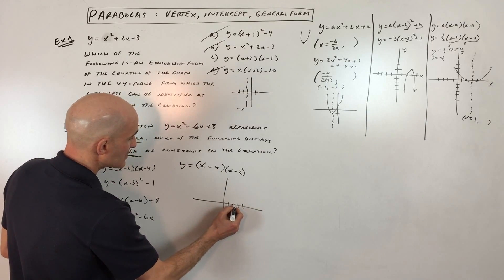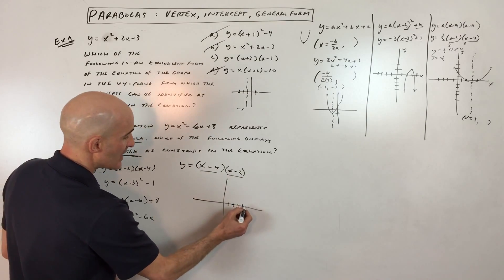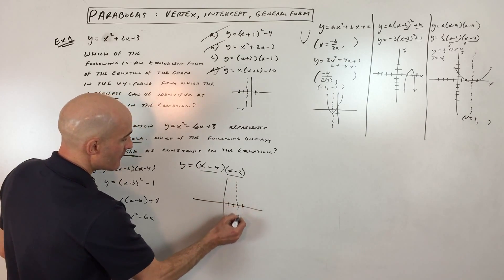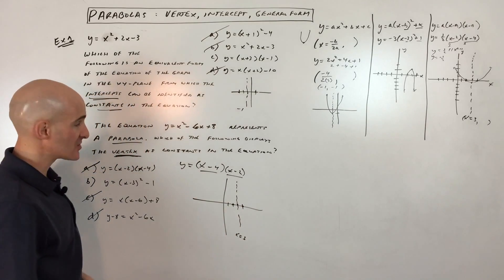You can see it's going to cross at positive 2 if you set this to 0, and positive 4 if you set that to 0. You find that halfway point, that's your axis of symmetry, x equals 3.